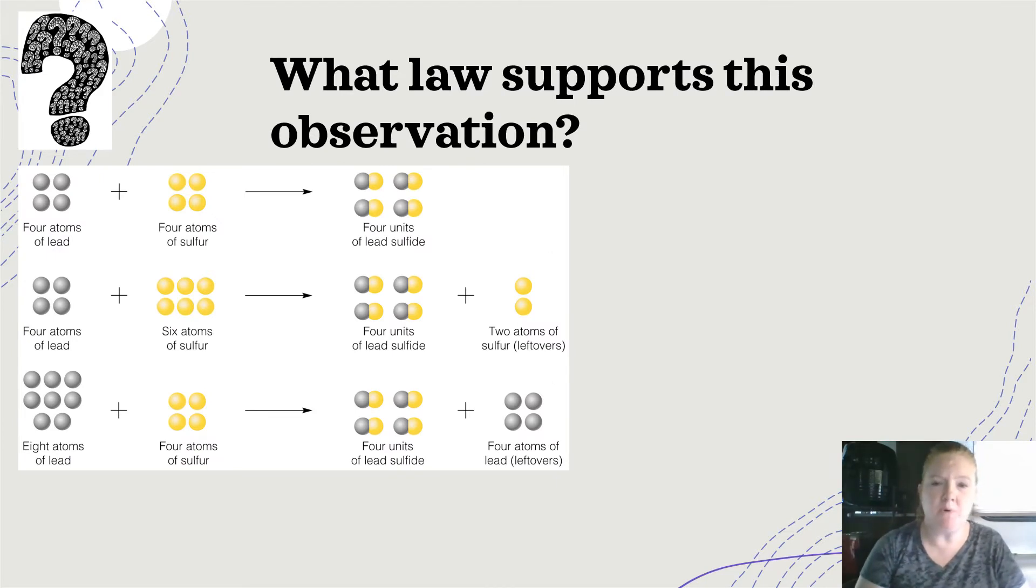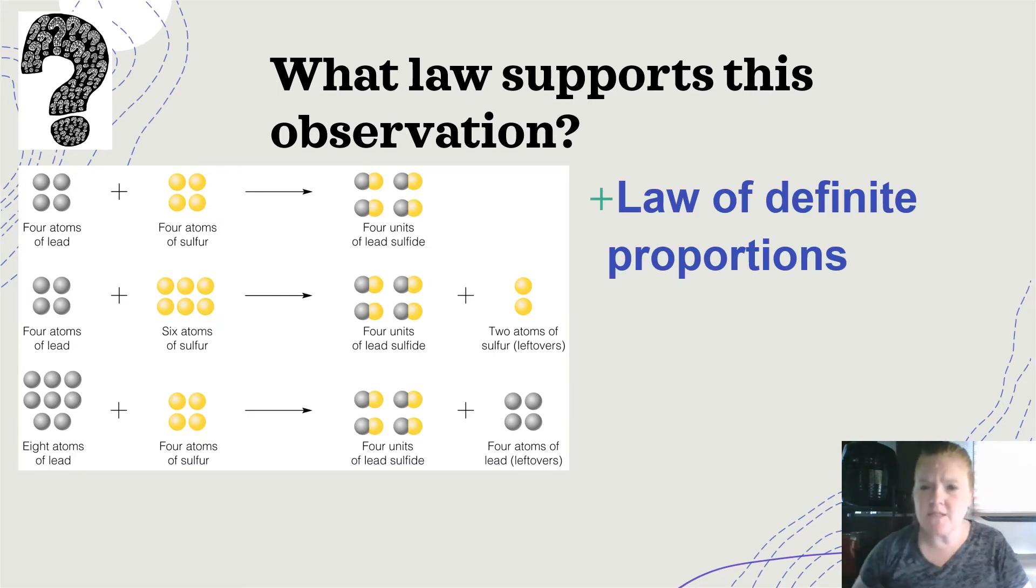And then what law supports this observation? So if I have four atoms of lead and four atoms of sulfur, I get four of lead sulfide. But if I have six atoms of sulfur instead, I still only get four of lead sulfide, I just have some extra sulfur. Or in the last case, I have some extra lead. So this is the law of definite proportions. So for lead sulfide, it is always one lead, one sulfur combining. So if I don't have enough sulfur left, I don't get any more lead sulfide. If I don't have any more lead, the proportion is always the same.